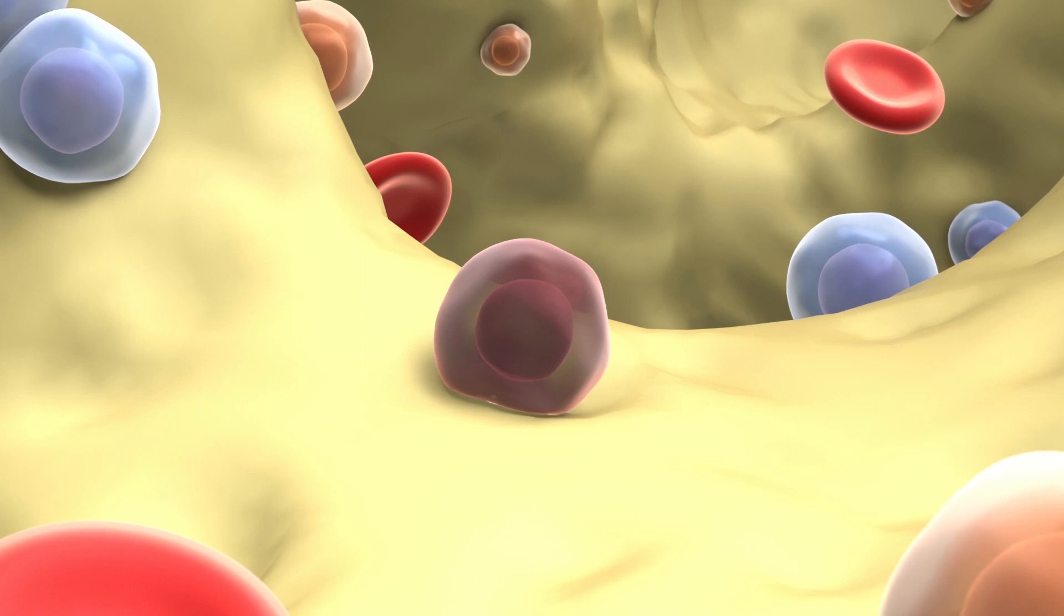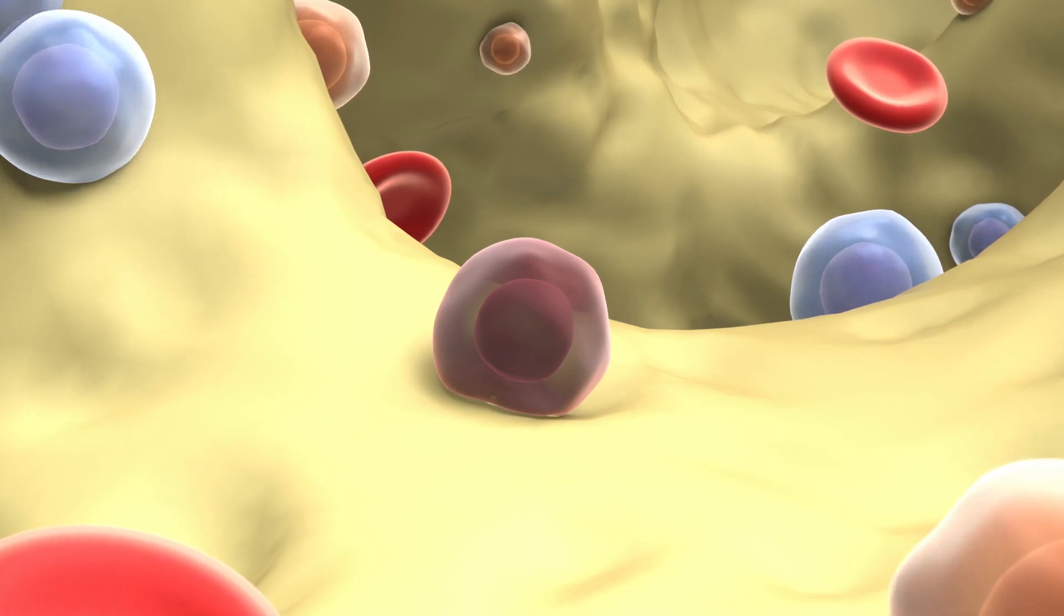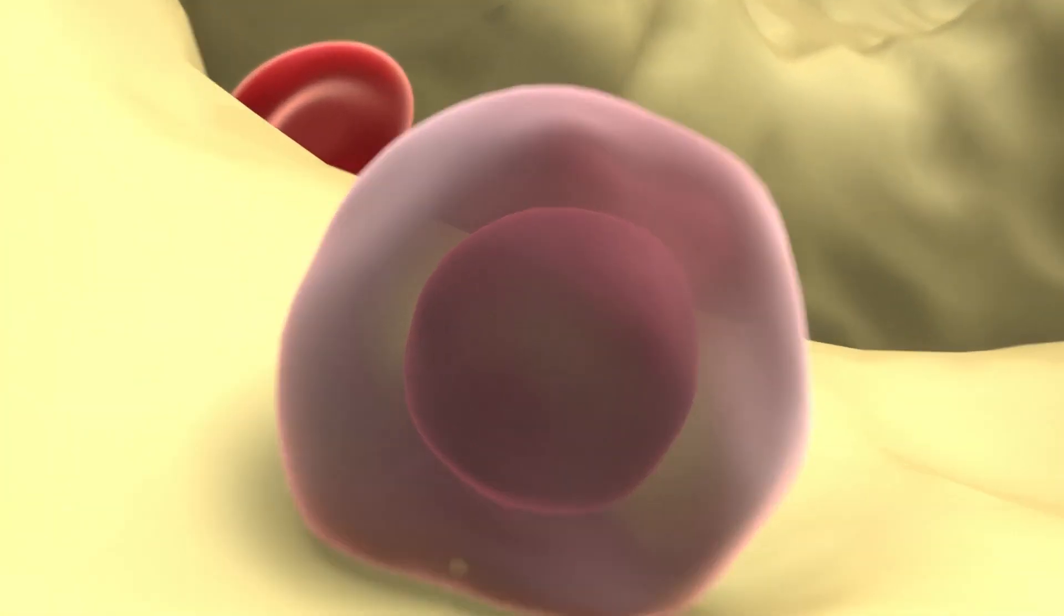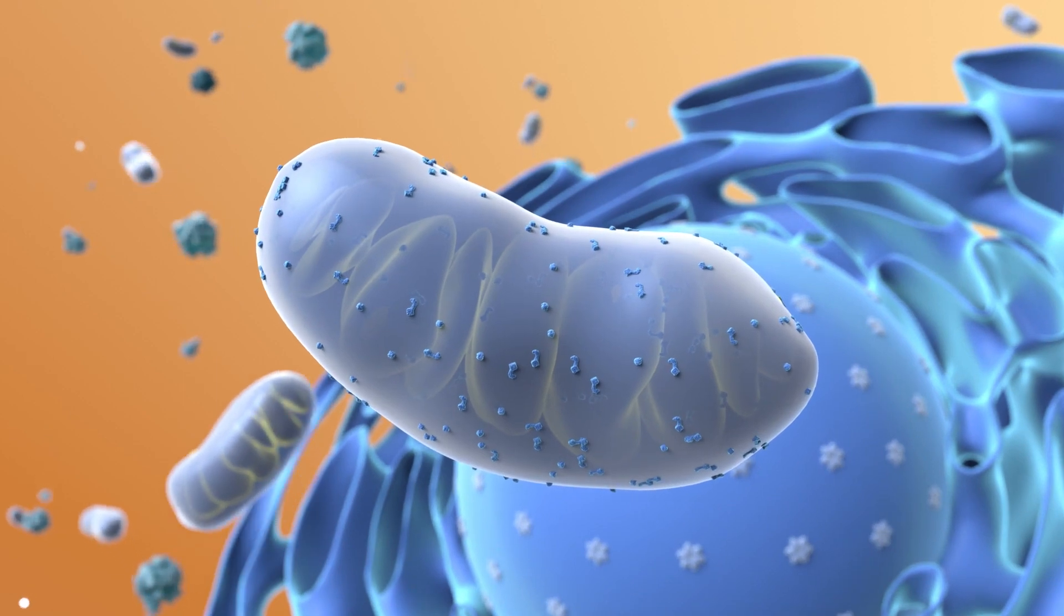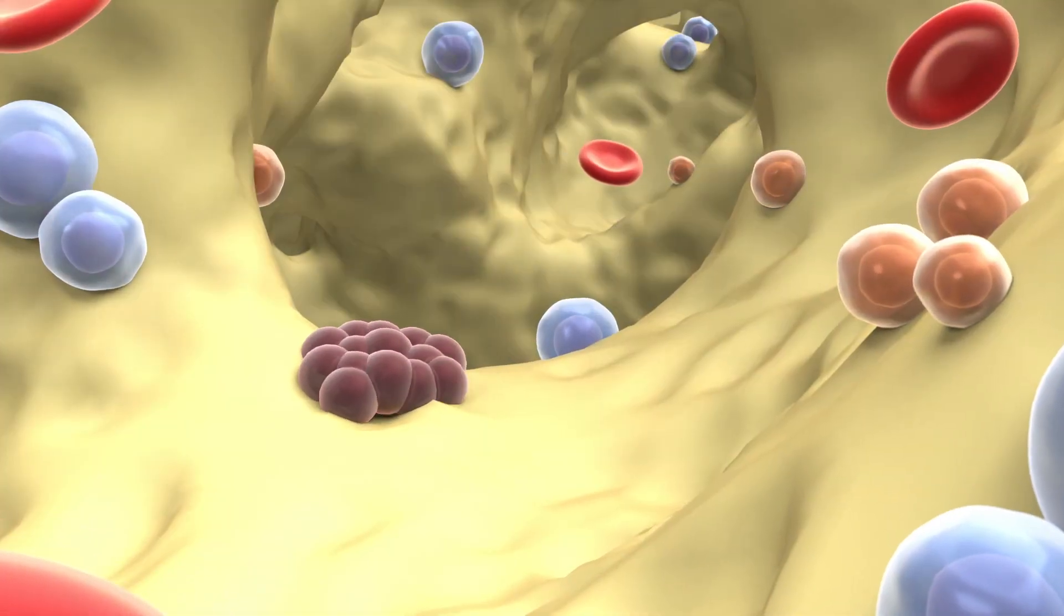The dysregulation of these proteins results in uncontrolled cell proliferation, such as cancer. Anti-apoptotic proteins are often overexpressed in cancer cells, maintaining their survival.